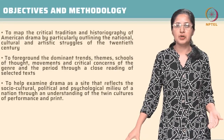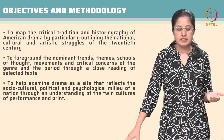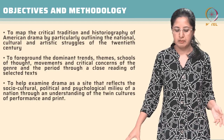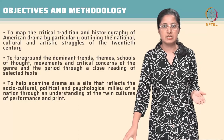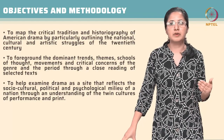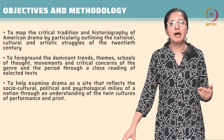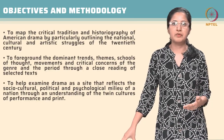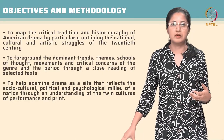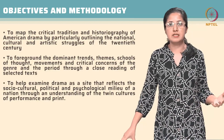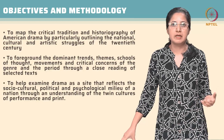Let me quickly take you through the objectives and the methodology adopted for this course. One of the major objectives is to map the critical tradition and historiography of American drama, particularly by outlining the national, cultural and artistic struggles of the 20th century. The history of American literature will be mapped against the history of European modernism, and the background provided for each text will outline these struggles and how American drama has emerged as a product of these different conflicting and sometimes complementing factors.